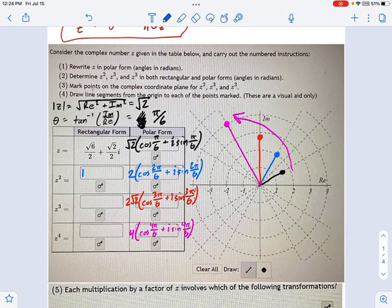And the sine of 2 pi over 6 is radical 3 over 2 times 2 becomes radical 3. So this becomes 1 plus radical 3i. That's my rectangular form there.